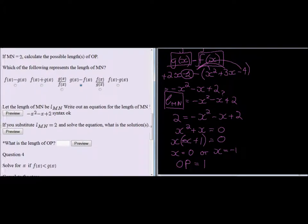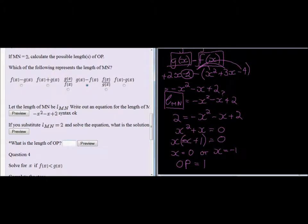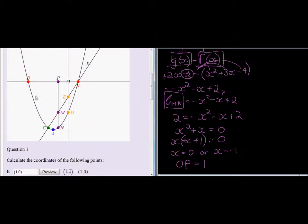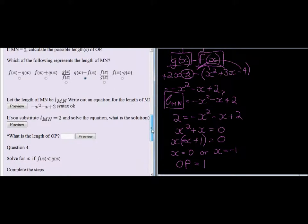Finally, what is the length of OP? So now we needed to decide: is the solution, the x answer that we got, is it that point or that point? Well, we figured we are on the negative side, so x must be the negative answer, not 0. And therefore this distance OP is equal to 1, because P is negative 1, so the distance of OP is 1.